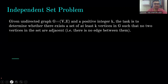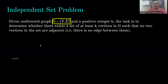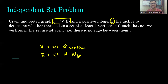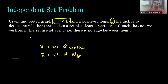Let's dive into the definition. What is the Independent Set problem? We are given a graph G, where V is the set of vertices and E is the set of edges. We are also given a positive integer k. The task is to determine whether there exists a set of at least k vertices in G such that no two vertices in the set are adjacent — that means there is no edge between them.